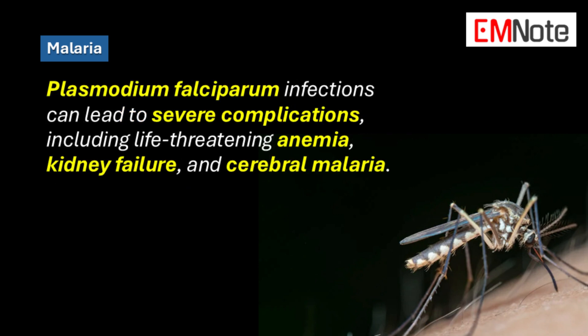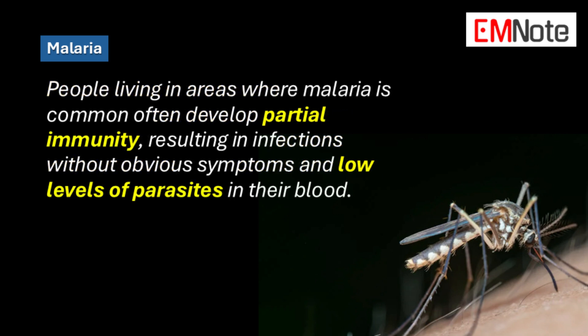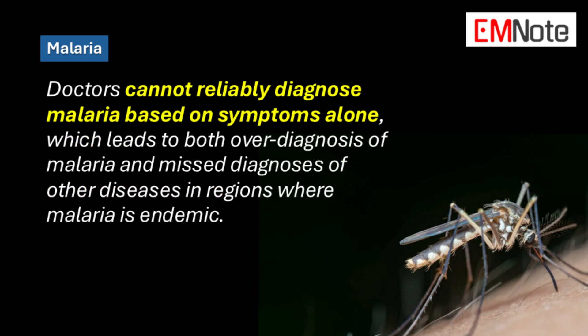Plasmodium falciparum infections can lead to severe complications including life-threatening anemia, kidney failure, and cerebral malaria. People living in areas where malaria is common often develop partial immunity, resulting in infections without obvious symptoms and low levels of parasites in their blood. Doctors cannot reliably diagnose malaria based on symptoms alone, which leads to both overdiagnosis of malaria and misdiagnosis of other diseases in regions where malaria is endemic.